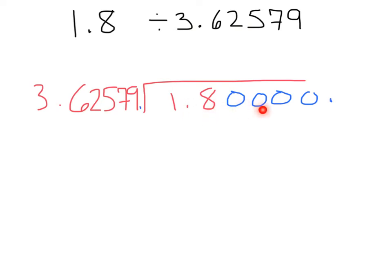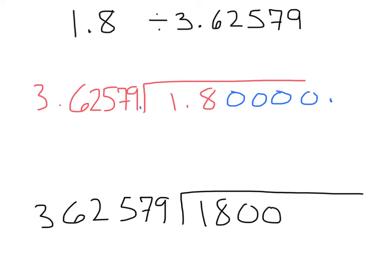Notice we have 1, 2, 3, 4, 5. So if we rewrote this problem out, we would have 362579 divided into 180000 with a decimal place here. We know our decimal place is going to have to go here because it has to stay in the same spot.